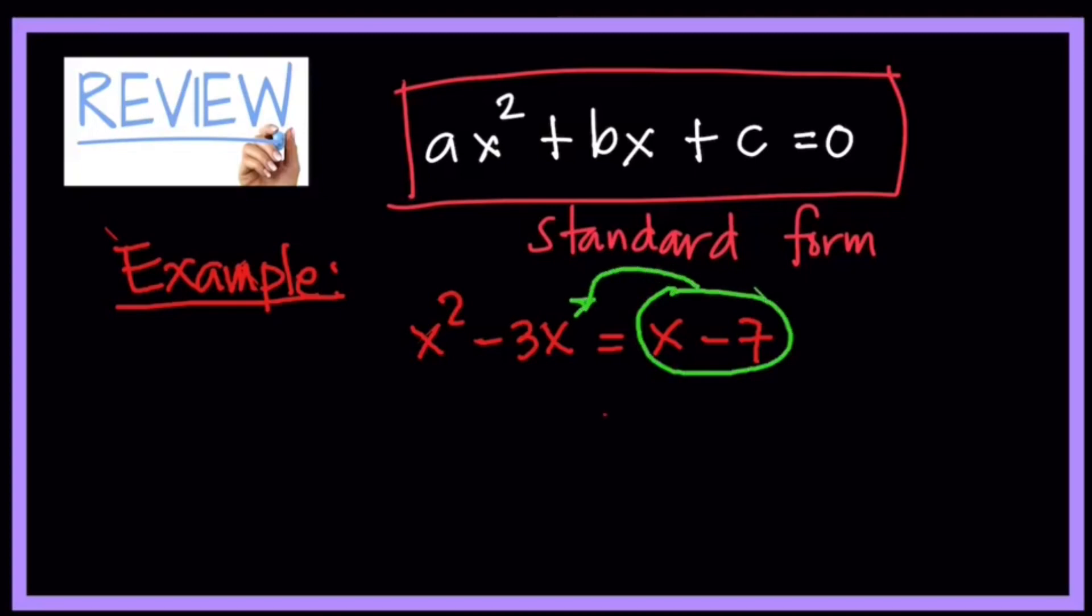So here we still have to simplify and make it in standard form. We are going to transpose x minus 7 on the other side. And now the new equation becomes x squared minus 3x minus x plus 7 is equal to zero.